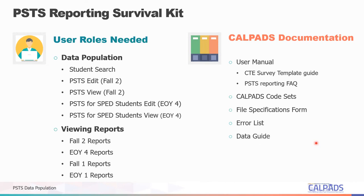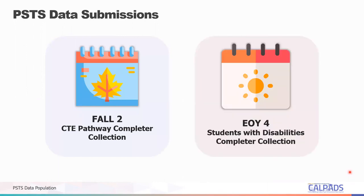PSTS survey and collection will be conducted in both Fall 2 and End of Year 4, with each submission collecting specific student groups. For Fall 2 collection, you report PSTS records of CTE completers who completed high school or exited in the prior academic year. For End of Year 4 collection, you report PSTS records of students with disabilities who completed high school in the prior academic year.